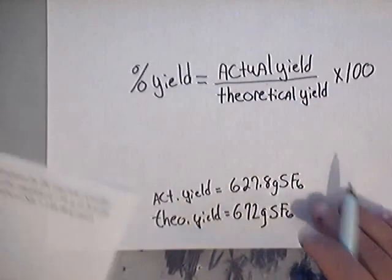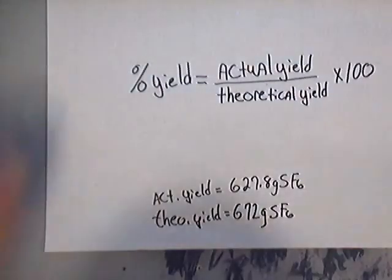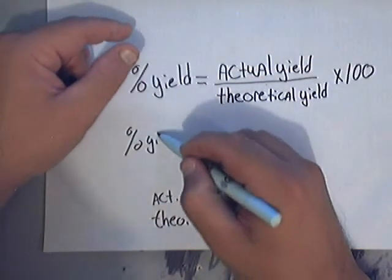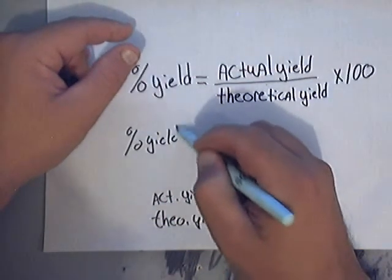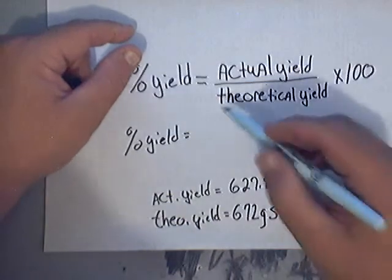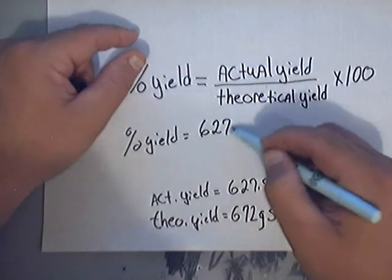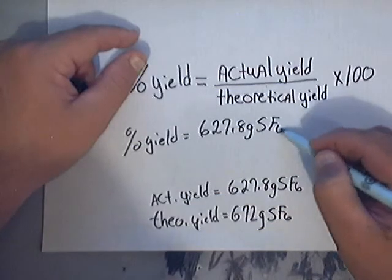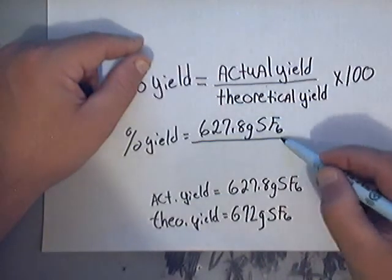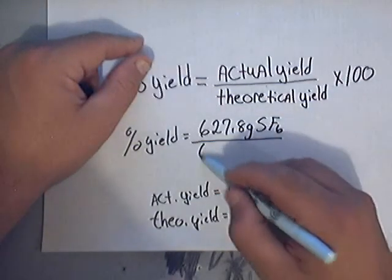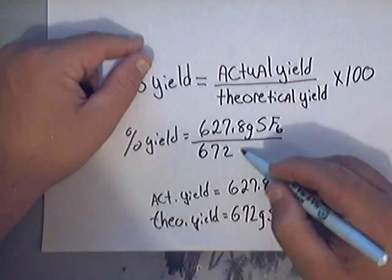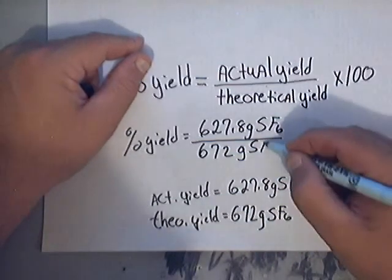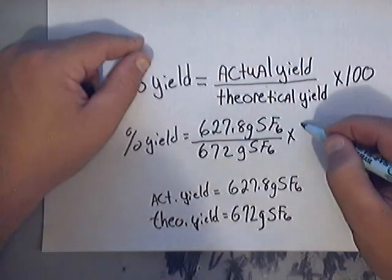All you have to do is plug these numbers into the equation and you're done. To calculate percent yield, you would take the 627.8 grams of sulfur hexafluoride, divide it by the 672 grams of sulfur hexafluoride, and multiply by 100.